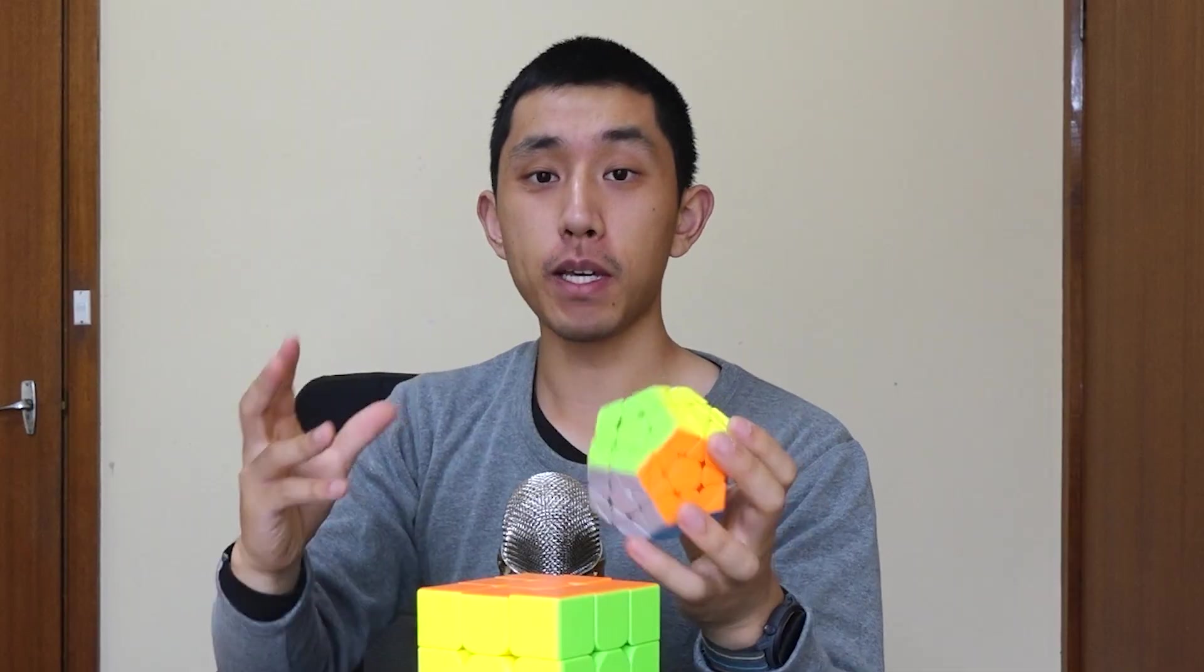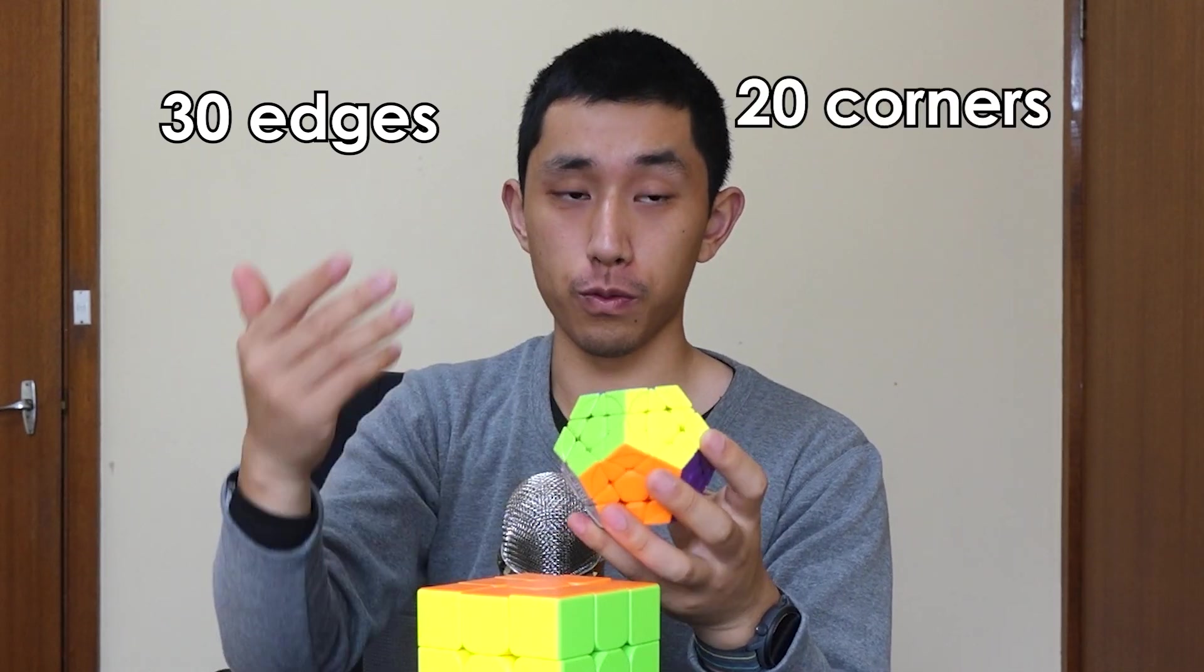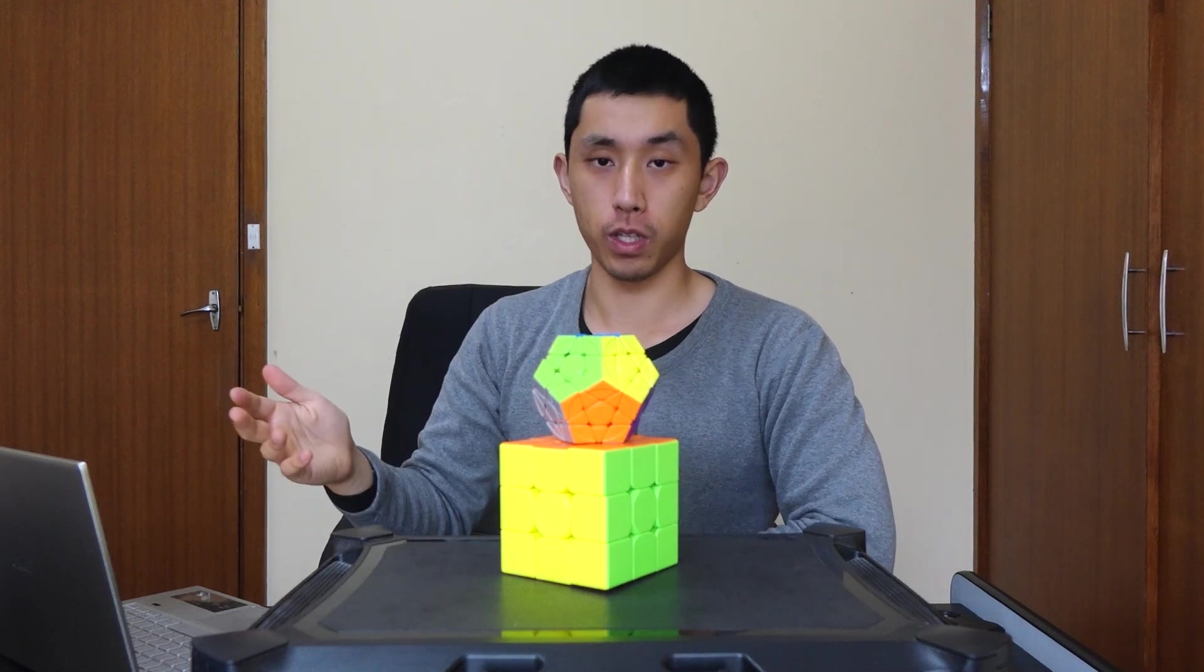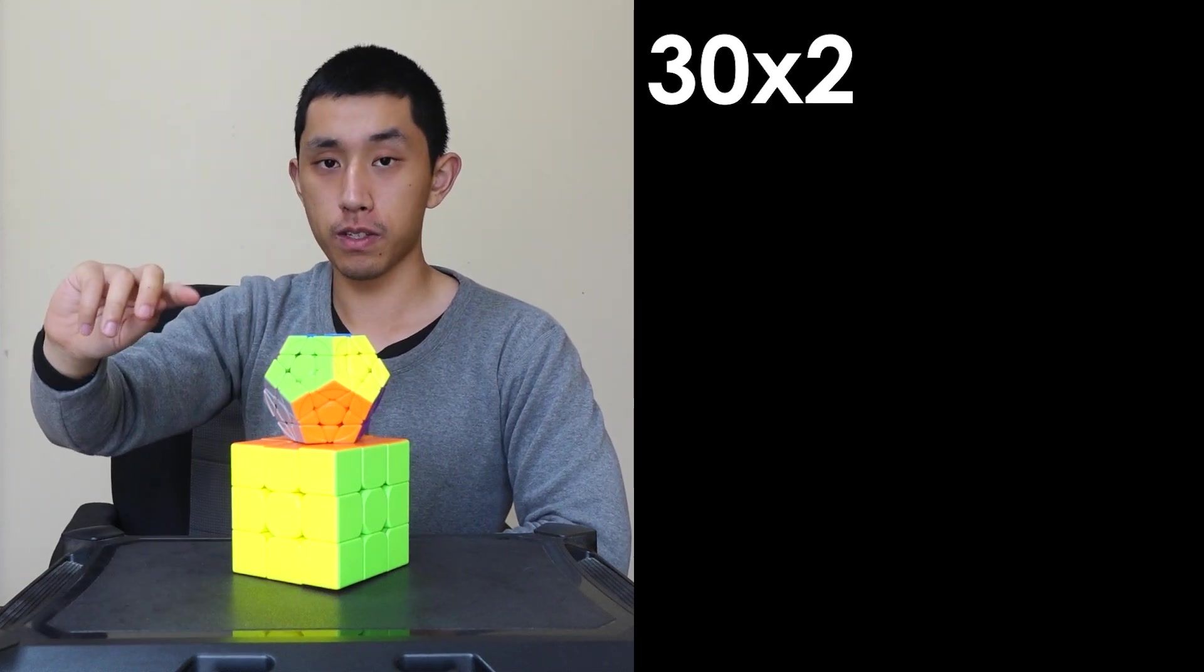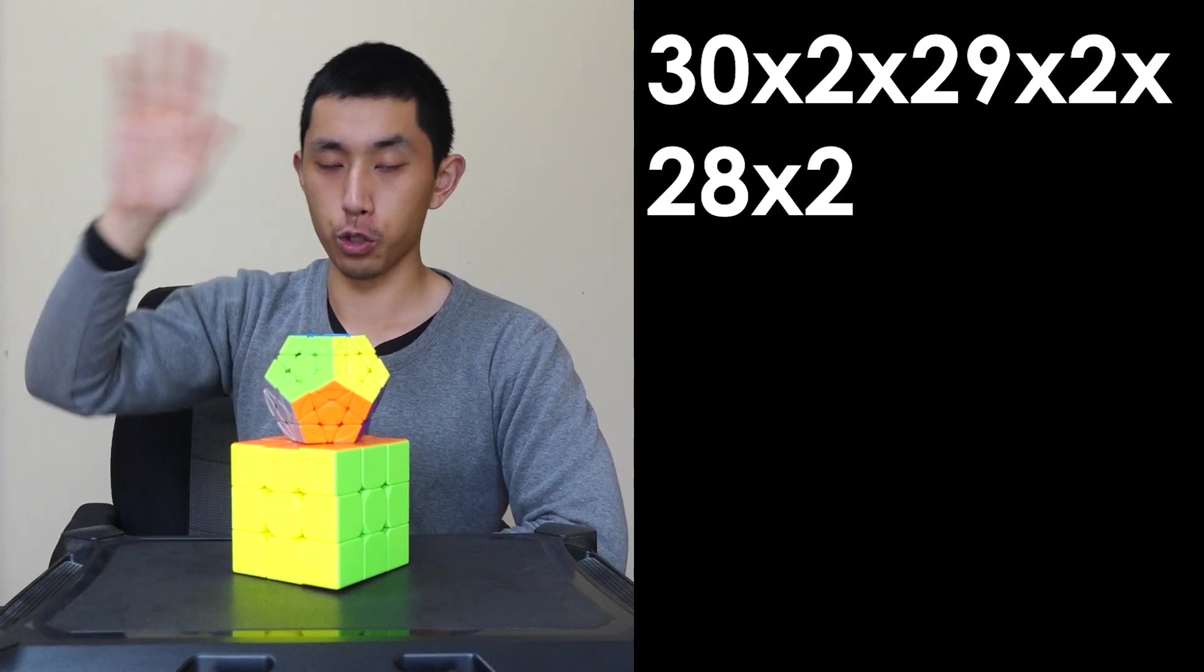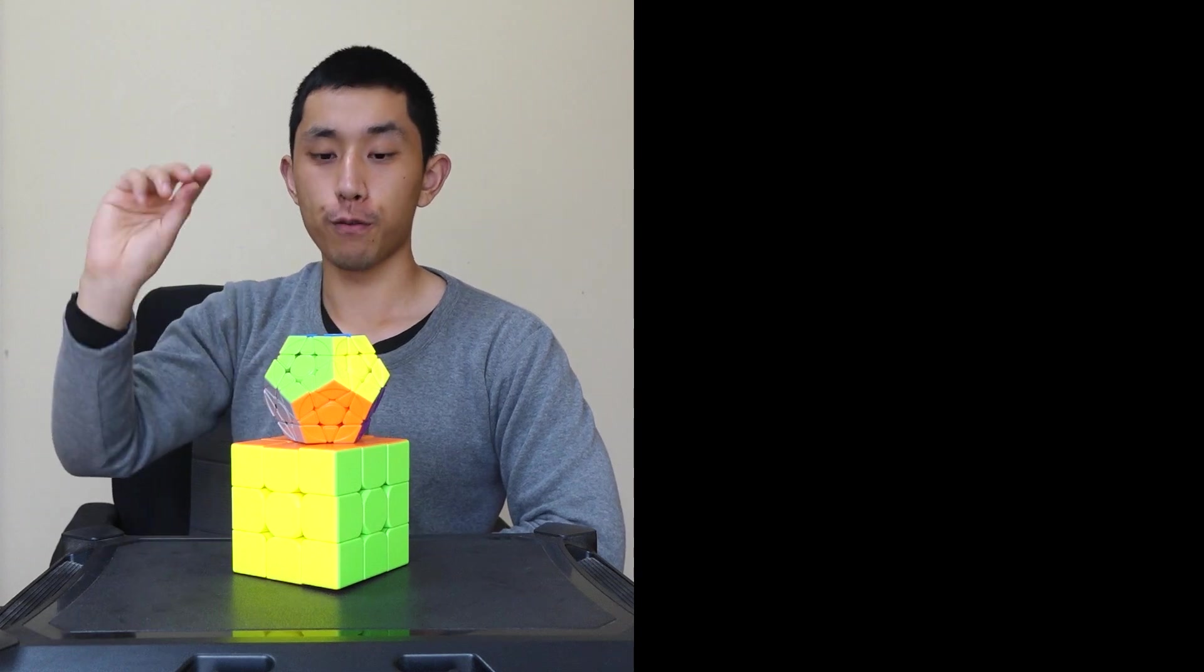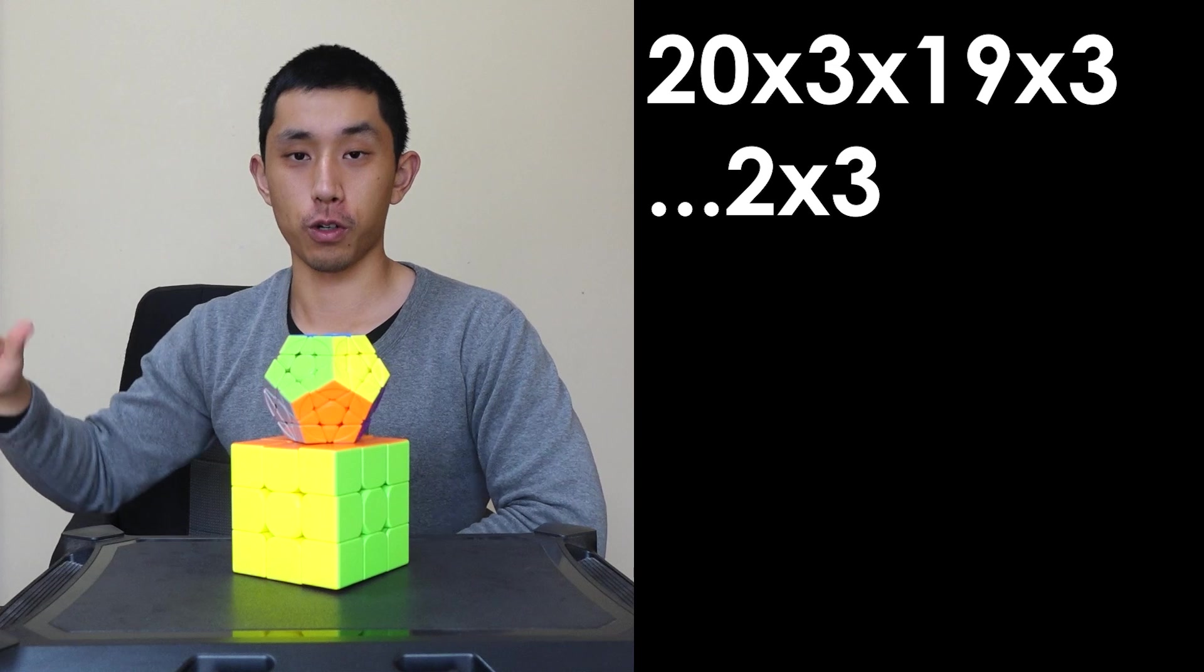Before we get to the 4D cube, we need to cover the Megaminx. The Megaminx has 30 edge pieces or two colored pieces and 20 corners or three colored pieces. We can apply the same logic to figure out the total number of possibilities without any restrictions. The first edge has 30 possible locations it can go to, and it can be oriented in one of two ways, then 29 possible locations with two possible orientations, 28, 27, all the way to the very last one. Same logic applies for the corners. The first corner has 20 possible locations it can go to with three possible orientations, and so on.